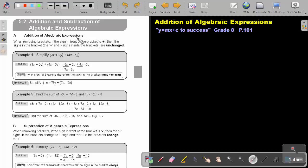Addition of algebraic expressions. When removing brackets, if the sign in front of the bracket is positive, then the signs in the bracket, the positive and negative signs inside the bracket, are unchanged. So if I'm asking you, let's look at this example.